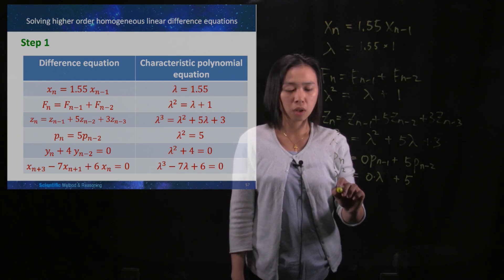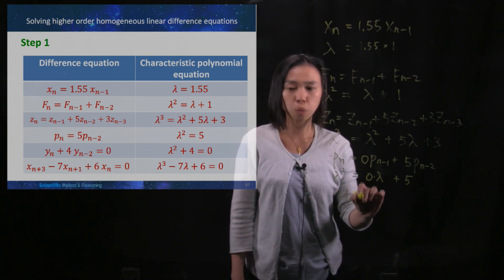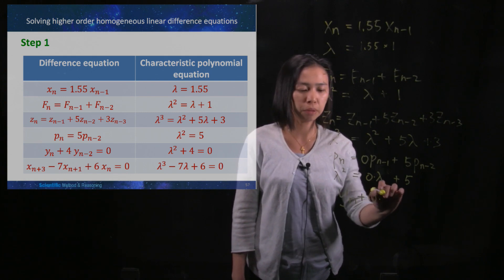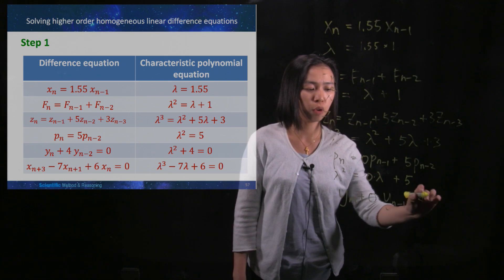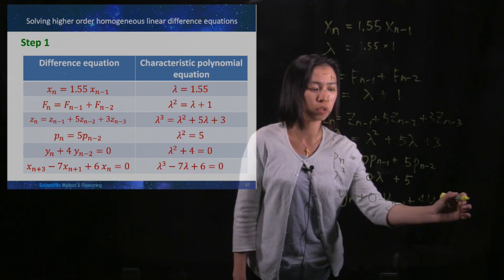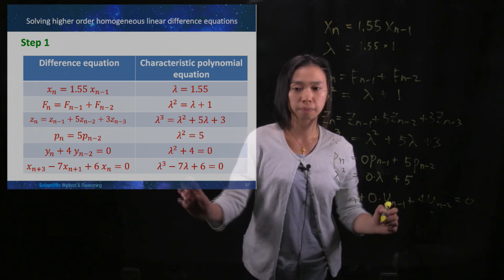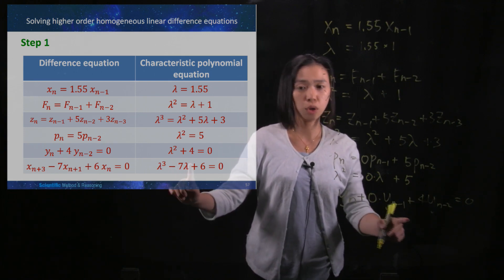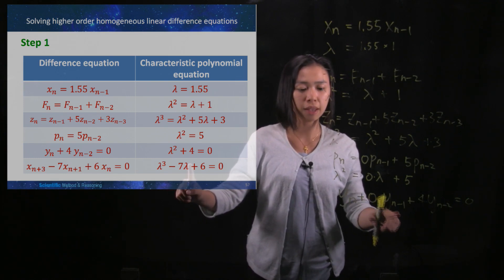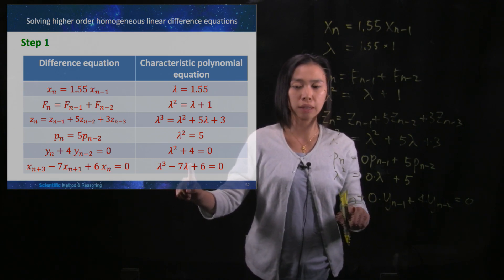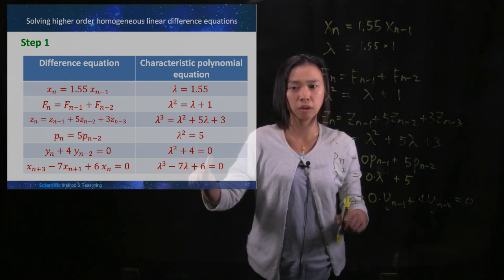In the fifth example: yn + 0·yn-1 + 4·yn-2 = 0. We convert the smallest term yn-2 to 1, giving the coefficient 4. The missing yn-1 term contributes 0·lambda, and yn becomes lambda squared. The characteristic polynomial is therefore lambda squared + 4 = 0.